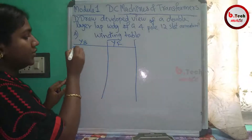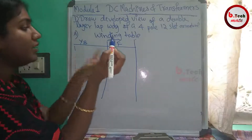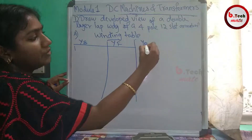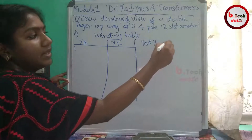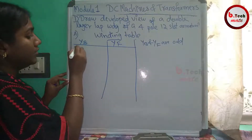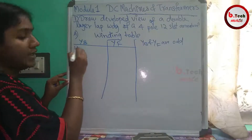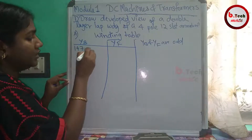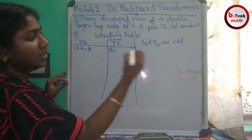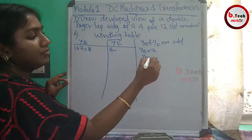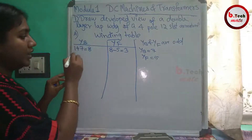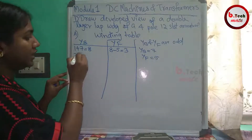YB = Z/P + 1 = 24/4 + 1 = 7. So YB = 7. YF = YB − 2 = 7 − 2 = 5. We start with conductor 1. Using YB: 1 + 7 = 8. Using YF: 8 − 5 = 3.